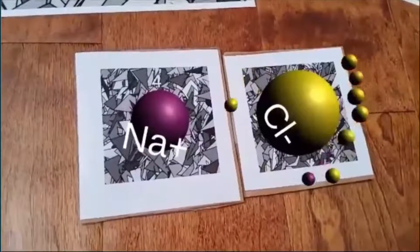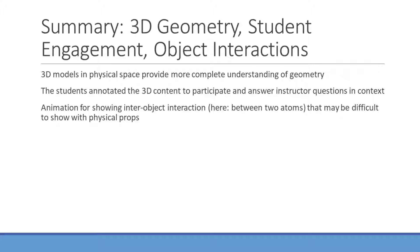In this lecture, we saw the instructor using a combination of physical and virtual models to demonstrate chemical bonding. The presentation of these models in 3D space helped to provide a more complete understanding of the molecule's geometry. The students also interacted directly with the virtual objects to answer a question, which gave quick feedback for the instructor. We also saw an animation between two atoms showing inter-object interactions, which may be difficult to show with physical props.